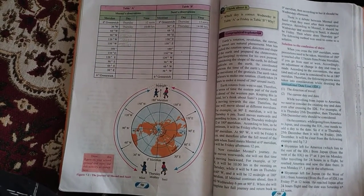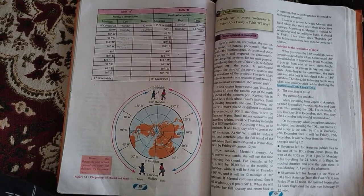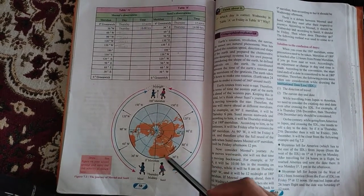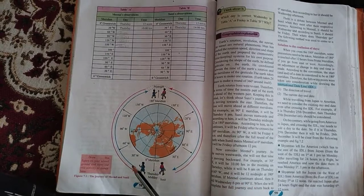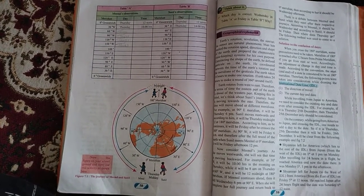Meridian is a line that we imagine on the surface of the earth that joins the North Pole to the South Pole and passes a particular place.